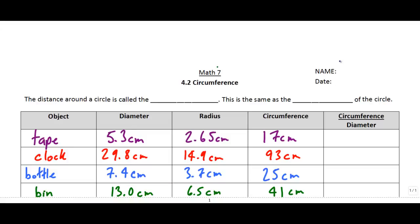Alright class, welcome back. We're on section 4.2 and today we're talking about circumference. Write your name and the date. So you may have learned previously that the distance around the outside of a circle, if we have a circle like this and we were to walk all the way around the outside, that is called the circumference.